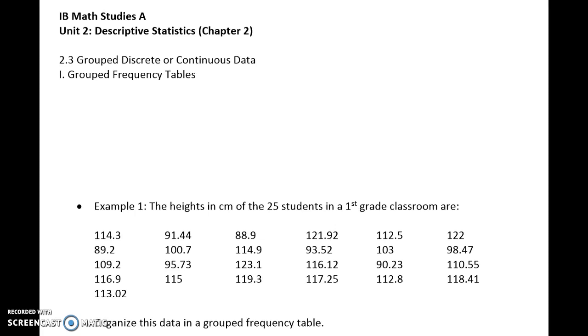So a couple things about grouped frequency tables. First, depending on what data values you've gathered or you're using, there should be between 5 to 15 groups or classes of equal width. Those are bands like, you know, 1 to 5, 6 to 10, 11 to 15, etc.